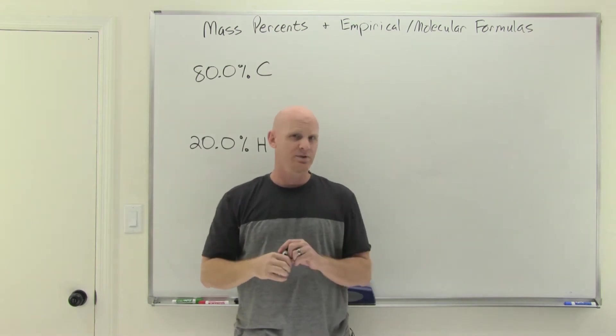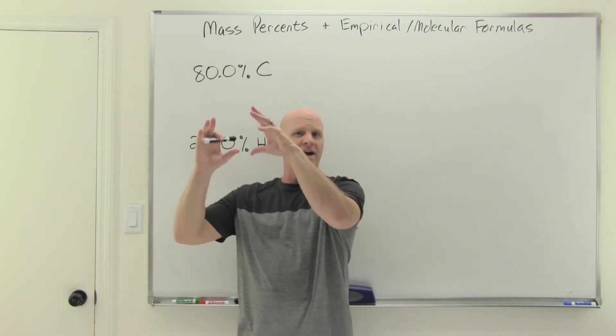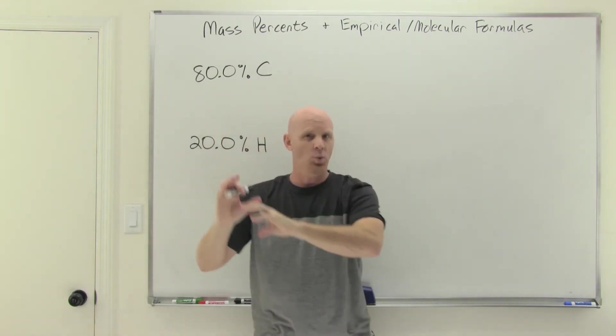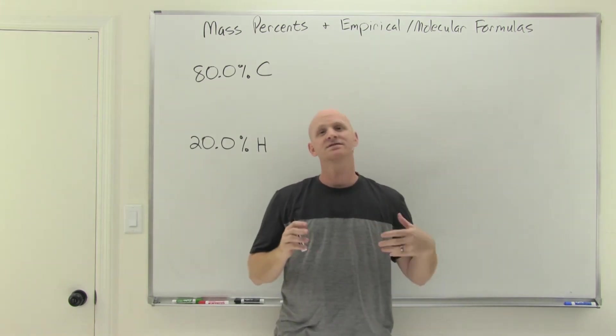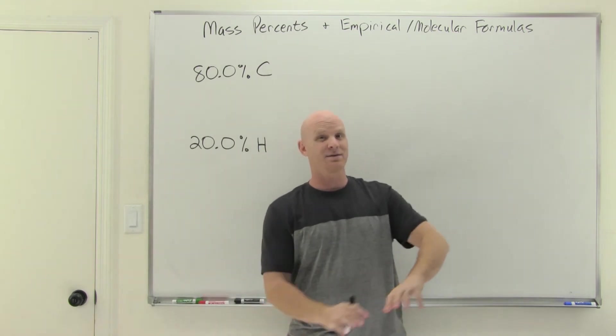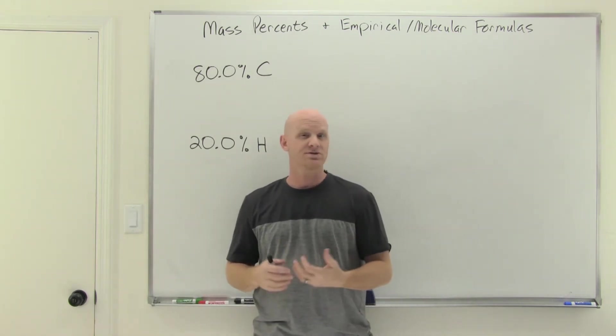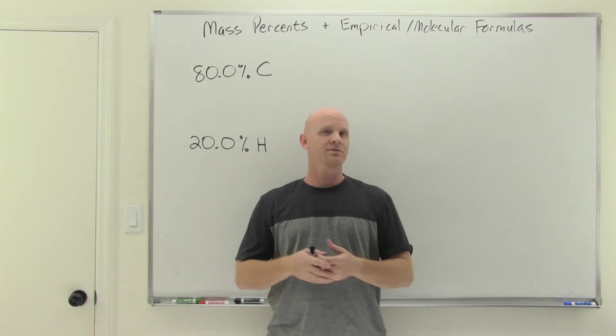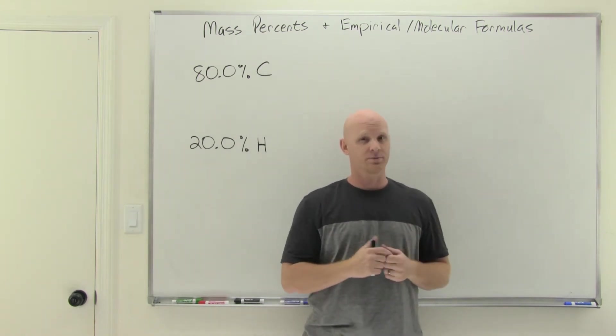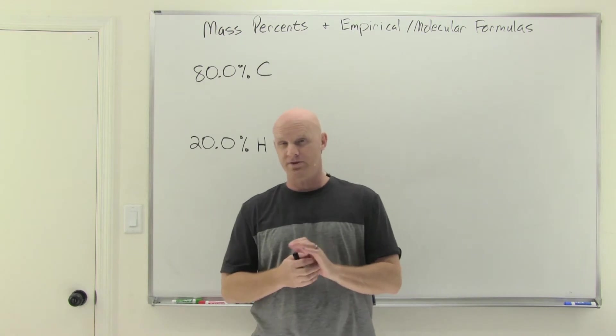The example with calcium carbonate we did earlier, we started with an actual formula and then went and found the mass percents. That's actually the easier way to do it. This time around, we're going to start with the mass percents and then try and get back to a formula. We'll see that we'll start by getting back to an empirical formula. This is definitely the harder of the two ways to do this.